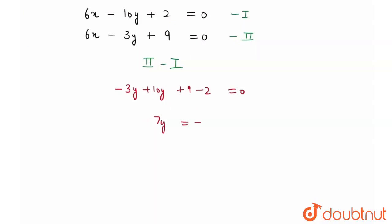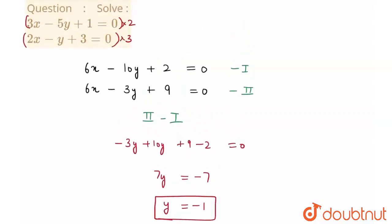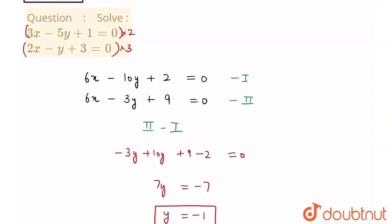7y is equal to minus 7. Therefore, y is equal to minus 1. And by putting this y in my first equation, I can get the value of x. So let's put this y in the first equation. Let me solve, let me write the step over here.